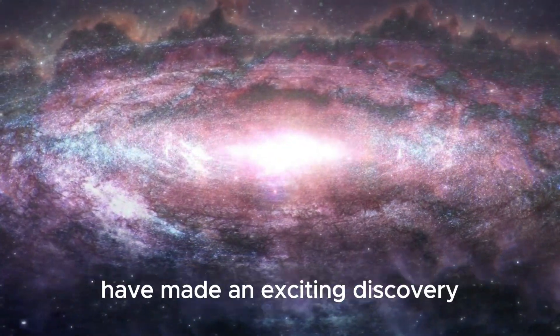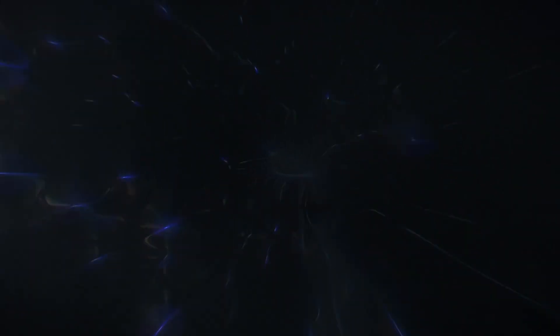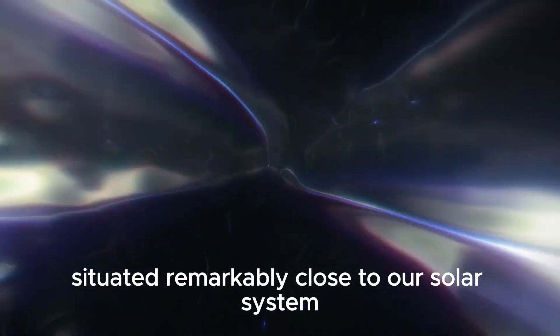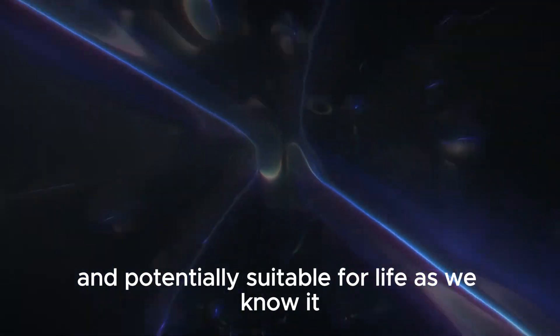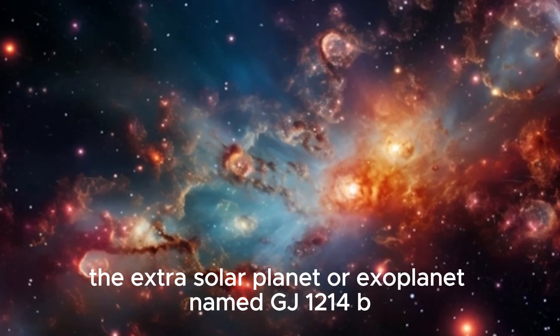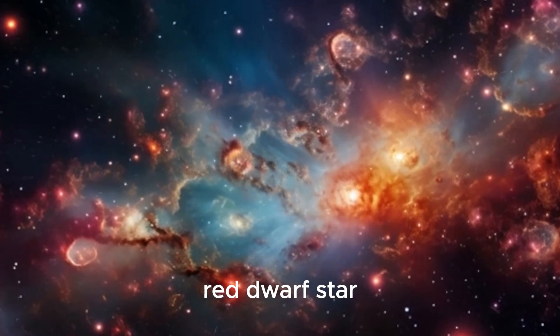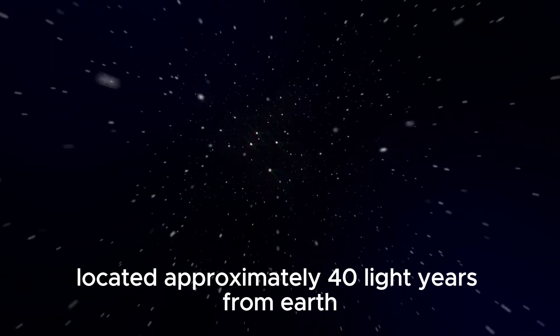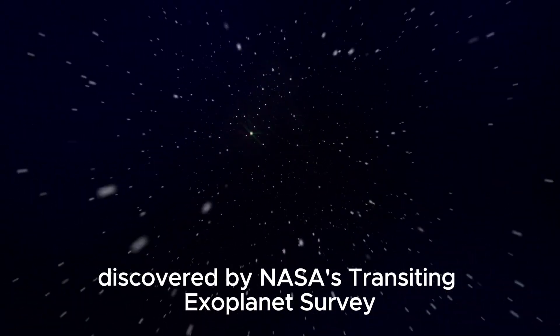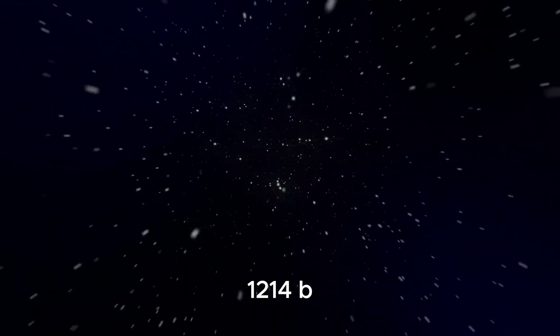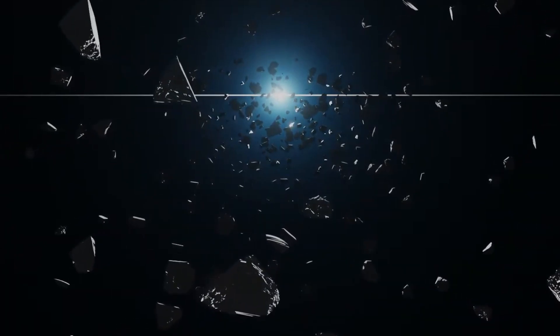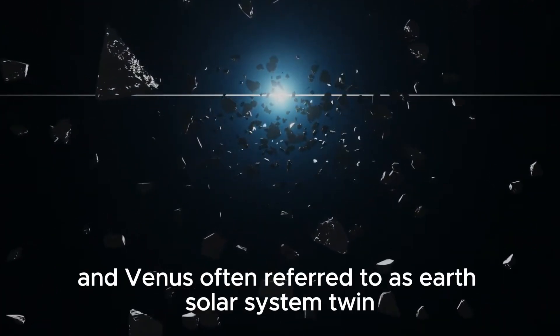In recent news, scientists using a NASA space telescope have made an exciting discovery. A tantalizing world approximately the size of Earth, situated remarkably close to our solar system and potentially suitable for life as we know it. The extrasolar planet, or exoplanet, named GJ 1214b, orbits a small, cool red dwarf star located approximately 40 light-years from Earth in the constellation Pisces. Discovered by NASA's transiting exoplanet survey satellite, TESS, GJ 1214b is estimated to be about 1.1 times the width of Earth, placing it in size similarity with both our planet and Venus.